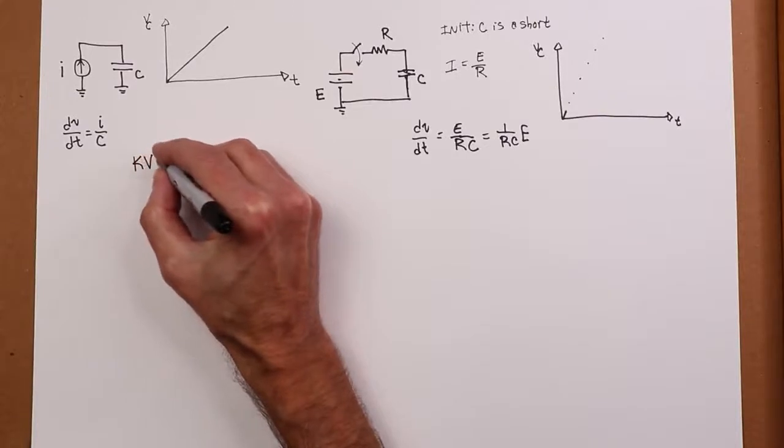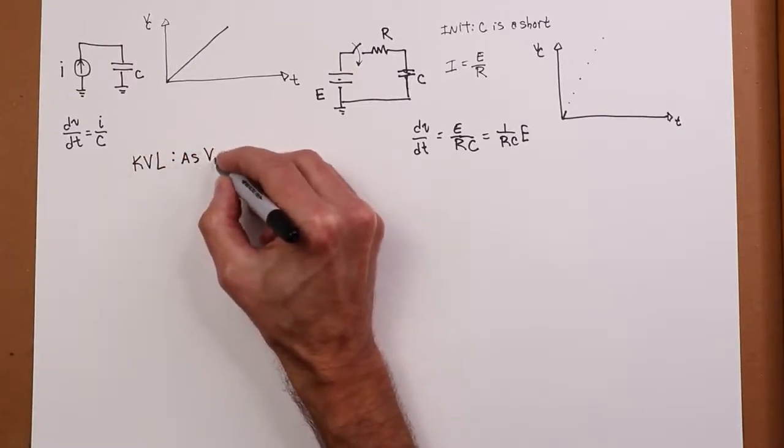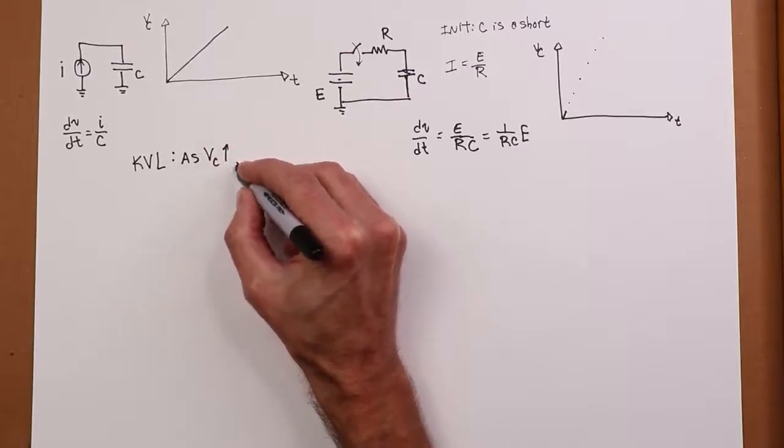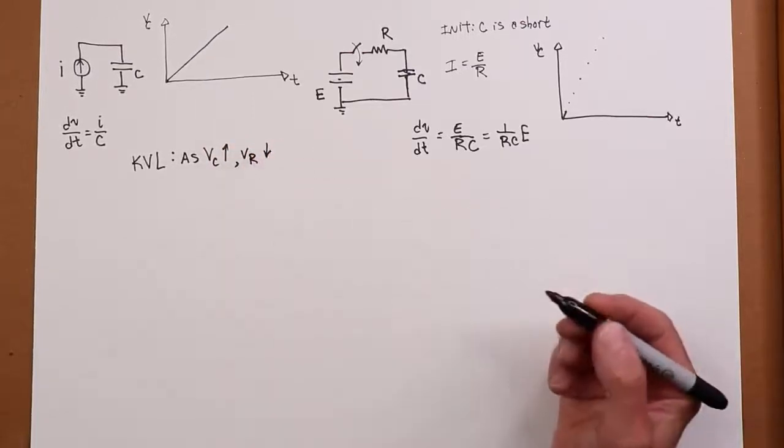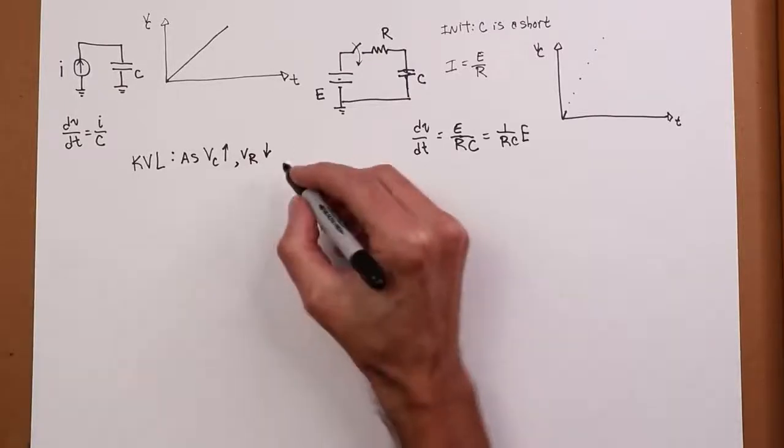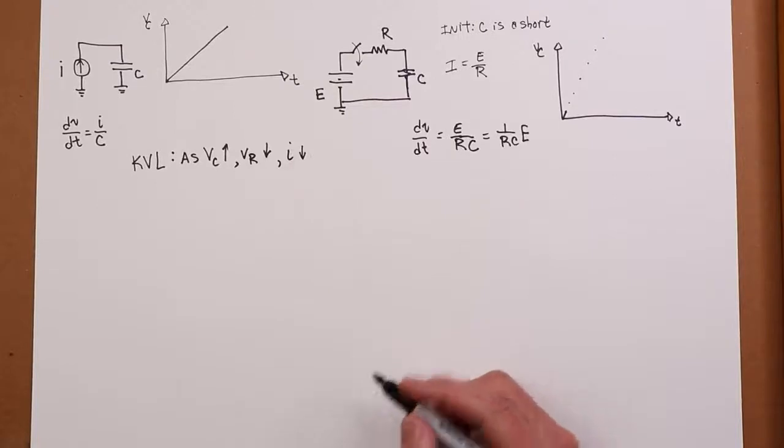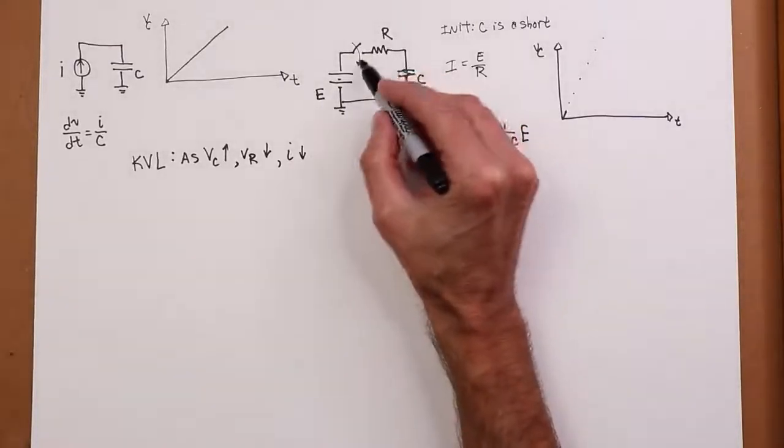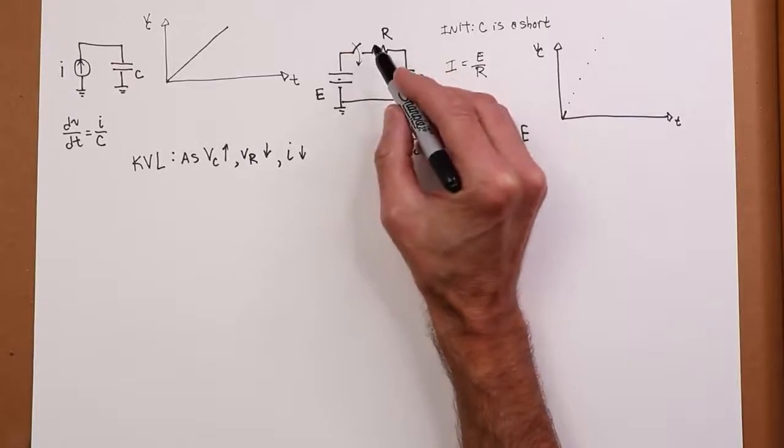So KVL tells you that as VC goes up, then VR has to drop. Now, why is that important? Because as VR drops, the current also drops. That's what sets the current, the drop across R. That's basic Ohm's law.